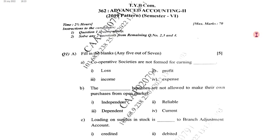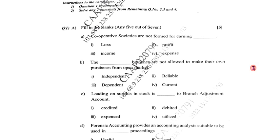So in today's video, we are going to discuss the correct answers of objective type questions — that is fill in the blanks, true or false, and match the following. This is the question paper. Question number 1: Fill in the Blanks. Solve any 5 out of 7. Total marks is 5.